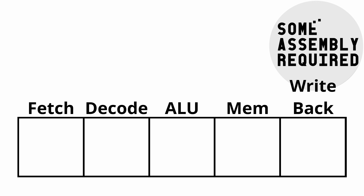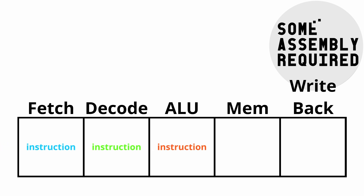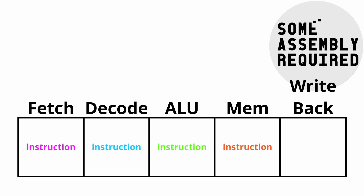The whole point with pipelines is that as soon as one instruction clears stage one, it immediately begins executing the next instruction. Thus, each instruction takes five cycles, but we're completing one instruction per cycle.